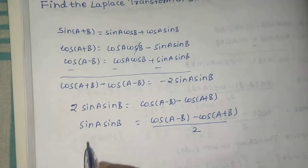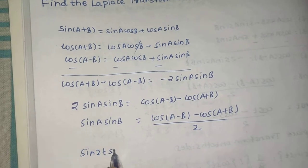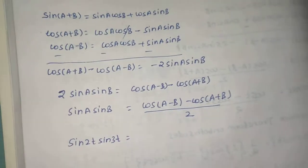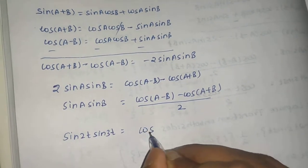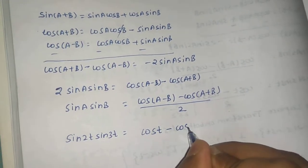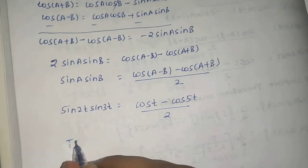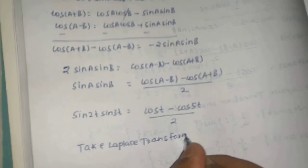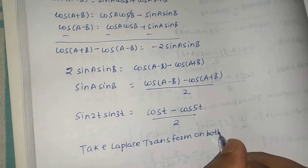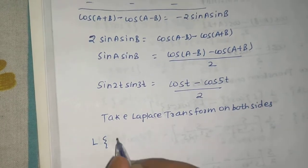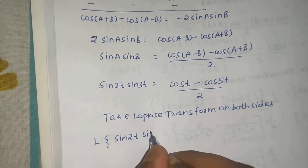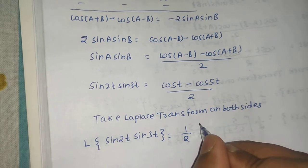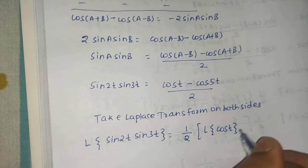In the current scenario, we need sin(2t)·sin(3t). So that is [cos(2t−3t) − cos(2t+3t)] / 2. cos(−t) = cos(t), so this becomes [cos(t) − cos(5t)] / 2. Taking the Laplace transform on both sides, we get L{sin(2t)·sin(3t)} = (1/2)·[L{cos(t)} − L{cos(5t)}].